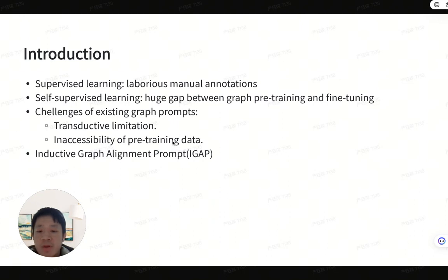In order to generalize the graph-prompt-based method to inductive scale networks, we propose a new kind of graph-prompt-based method from a spectral perspective named IGAP.